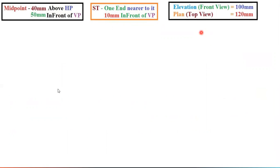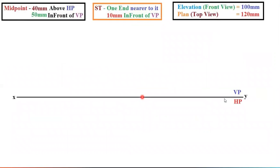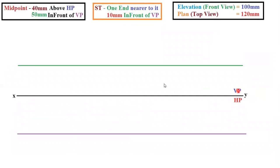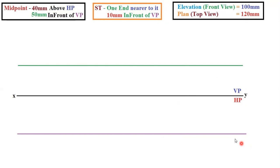The first step is to draw a reference line XY. According to first angle projection, VP is above and HP, the horizontal plane, is below the vertical plane. The next step is: the midpoint will be lying 40 mm above HP and 50 mm in front of VP. So from the reference line, take 40 mm and draw a straight line, and from the reference line take 50 mm and draw another straight line.